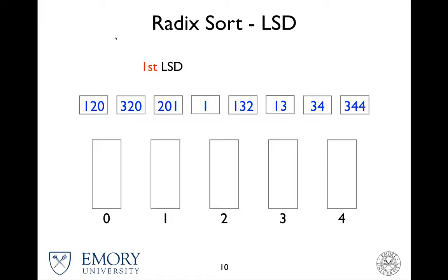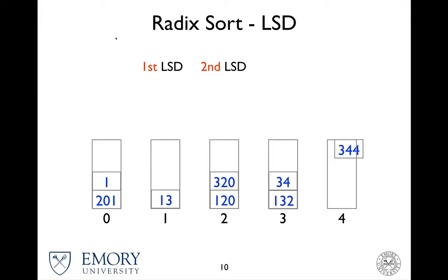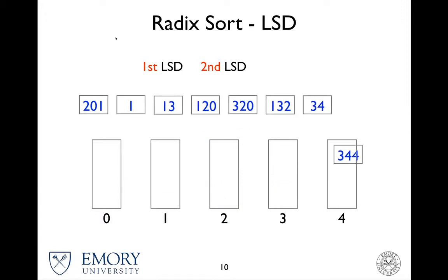Okay, so now we're done with the first least significant digit. We move on to the second one and simply do this again. 120 — the second least significant digit is 2. There's no second least significant digit for some numbers, so we simply put those to the 0 bucket. Then 3, 1, 3, 4. Then again, put them back: 1, 2, 3, 4.